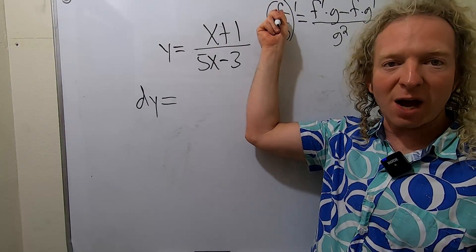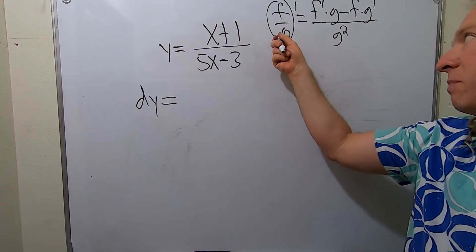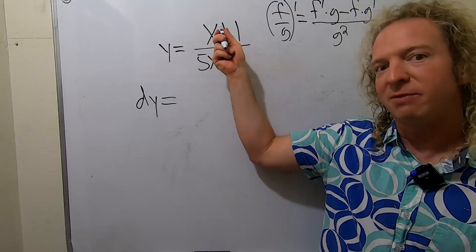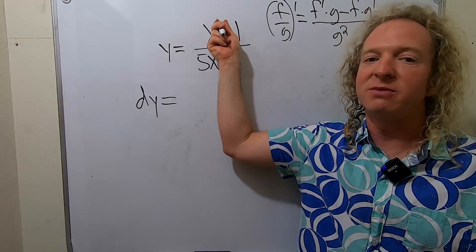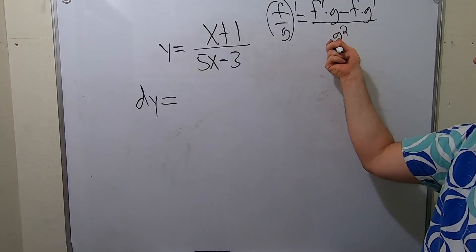You can think of this as the top or the first function and this as the bottom or the second. So it's the derivative of the top times the bottom minus the top times the derivative of the bottom, over the bottom squared.